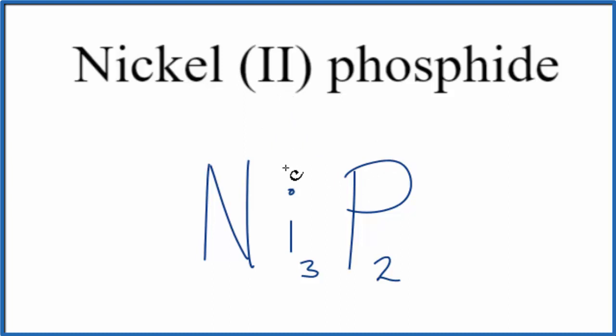Let's check our work. We said nickel-2, so 2-plus, and phosphide on the periodic table is 3-minus. So 2 times 3-minus is minus 6, and 3 times 2-plus is plus 6. We add these together, that gives us zero. So this is the formula for nickel-2-phosphide.